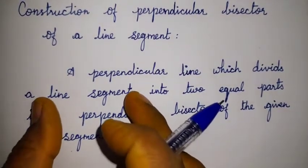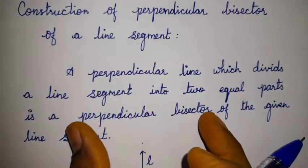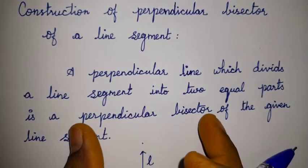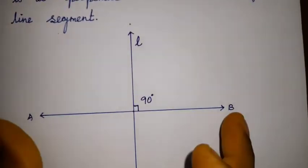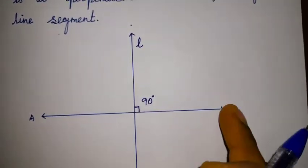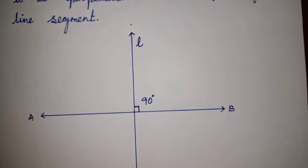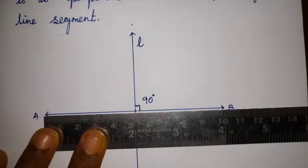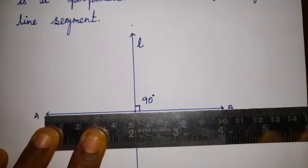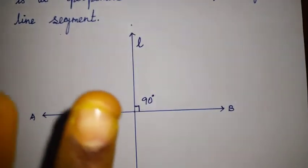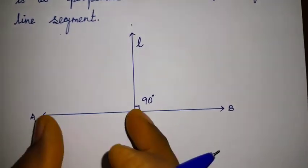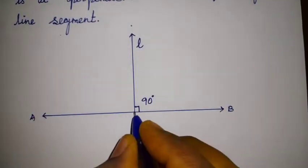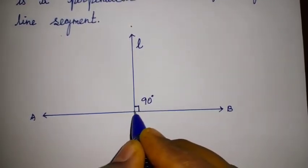If you have a line segment AB of length 10 centimetres, you can divide it into two equal parts — 5 centimetres plus 5 centimetres. The point where it is divided is called the midpoint. The midpoint divides line AB into two equal parts, one part each side, each measuring 5 centimetres.